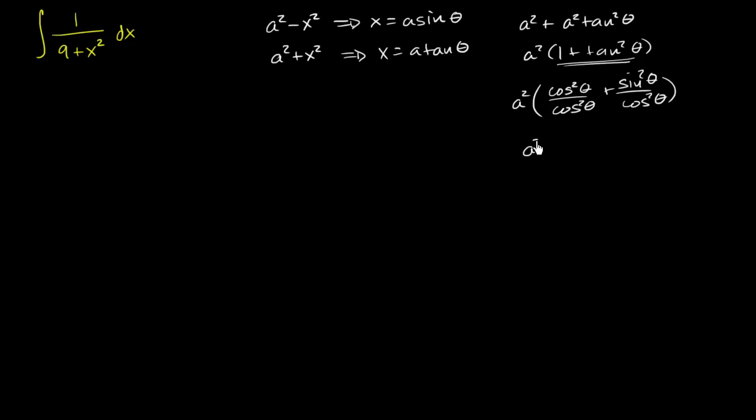And this is going to become a squared times cosine squared theta plus sine squared theta, all of that over cosine squared theta. This numerator from the unit circle definition of trig functions becomes 1. So this is 1 over cosine squared theta and everything simplifies to a squared secant squared theta, which might simplify things.